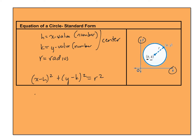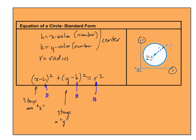Now here's what you have to realize: x stays as x, and y stays as y — I don't ever replace those. The h needs to be replaced with a number, k needs to be replaced with a number, and r needs to be replaced with a number. So that's what my equation will look like, where h and k are the center and r is my radius.